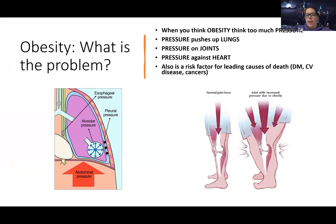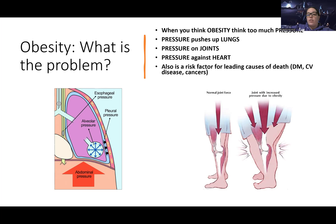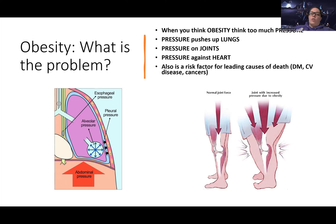So what's the big problem with obesity? Why do we care so much? With obesity, everything leads to too much pressure. Pressure can push up on the lungs — like when you're pregnant and can't take deep breaths because excess pressure prevents the lungs from expanding fully. It puts pressure on the diaphragm, making ventilation harder. It also pushes down on joints. And there is pressure against the heart, making it harder to expand, which leads to decreased cardiac output.